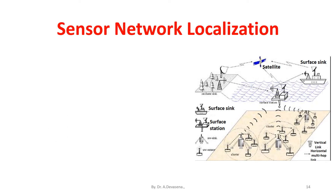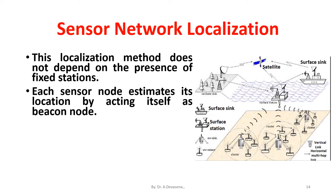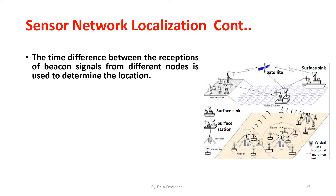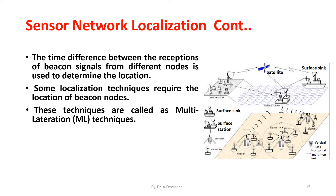Sensor network localization does not depend on the presence of fixed stations. Each sensor node estimates its location by acting itself as beacon nodes. The location of a sensor node can be determined using GPS, and this information is broadcast to every node in the network. The time difference between the receptions of beacon signals between different nodes is used to determine the location. Some localization techniques require the location of beacon nodes; these are called multilateration techniques, or ML. Some ML techniques are: Atomic ML, Iterative ML, and Collaborative ML.